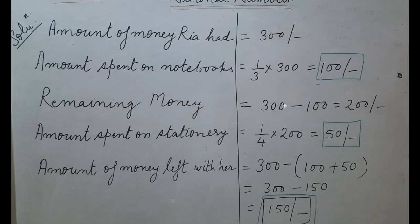Since the question asks about the remainder, we find the remaining money after spending on notebooks: 300 minus 100 equals 200 rupees. Now, she spent one-fourth of the remaining money on stationery — one-fourth of 200, again 'of' means multiplication — which equals 50 rupees.